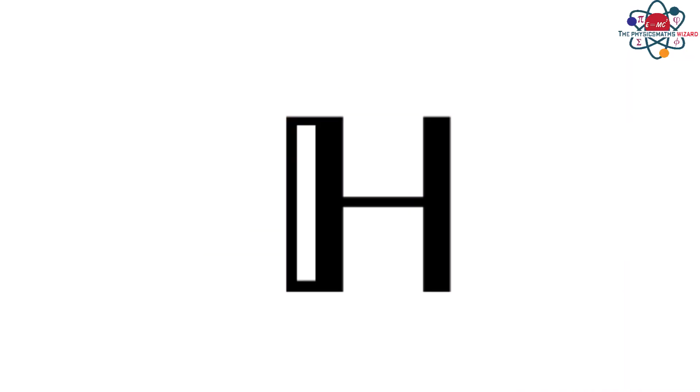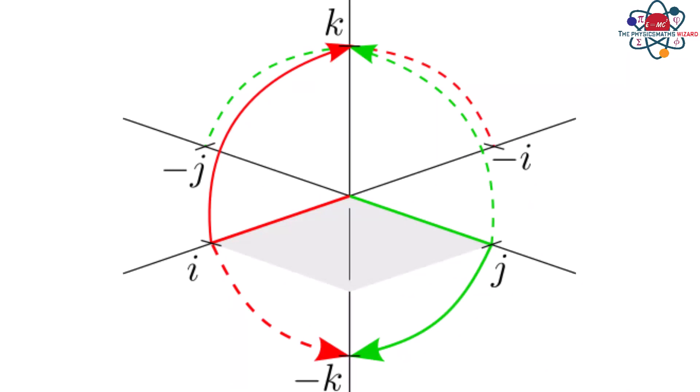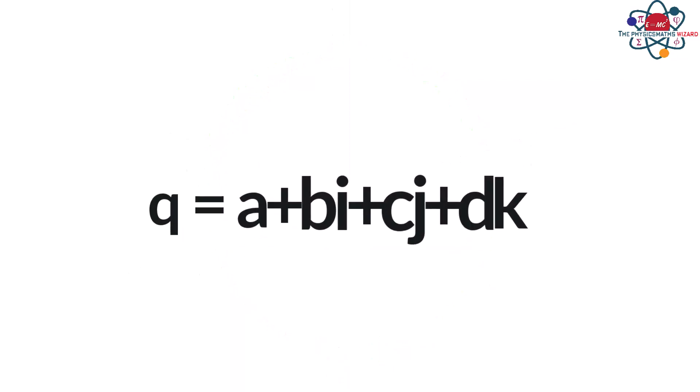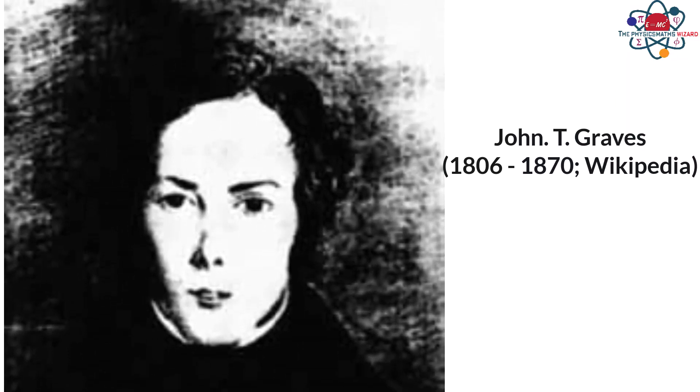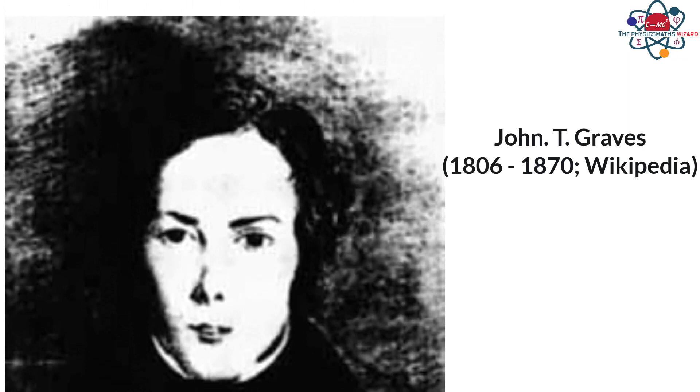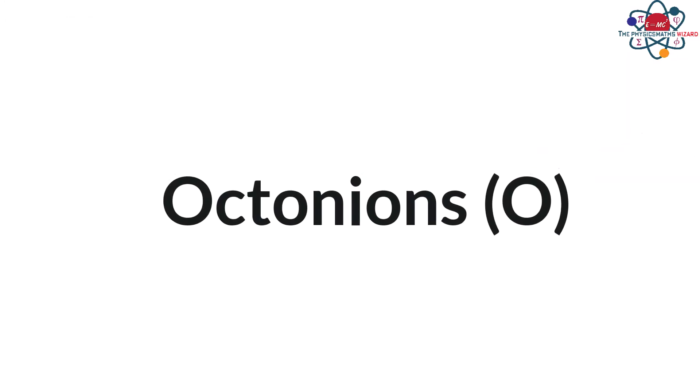Quaternions are represented by the bold letter H, and are basically created by adding two more dimensions to the normal complex number — the J and K dimensions. With inspiration from Hamilton, John T. Graves, in December of 1843, discovered that the algebra of eight-dimensional numbers was possible. These eight-dimensional numbers are what we now call the Octonions, represented with a bold letter O. Octonions were independently discovered by another mathematician, Arthur Cayley, around the same time as John Graves. In 1919, Arthur Cayley and Leonard Dixon showed that it was possible to take any algebra with involution and create another algebra of twice the dimension.